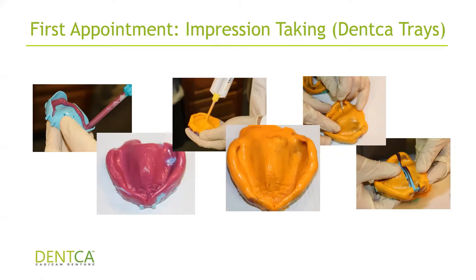Once you've identified the correct size, fill it up with heavy body PVS — add a lot in the center and some on the borders as well. Seat it and border mold to obtain a good impression. Then take a handpiece and relieve any areas of tray show-through, and do a light body wash. This is pretty standard procedure for any impression that is going to become a denture. Once you're done with your wash, do the same with the lower if you're doing upper and lower.